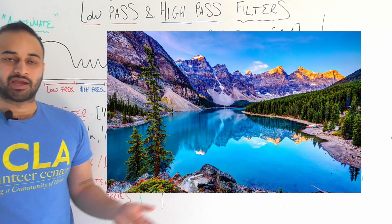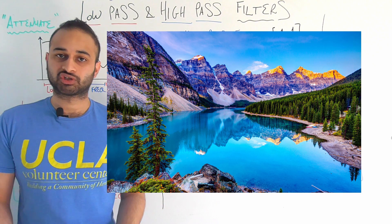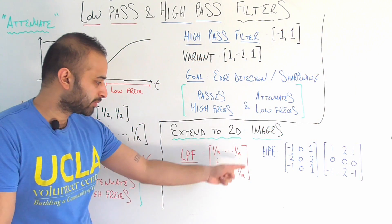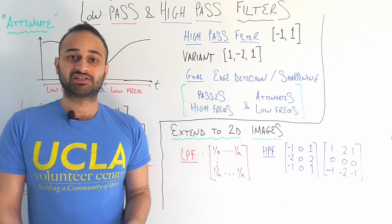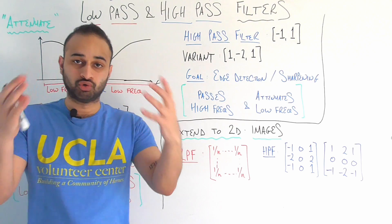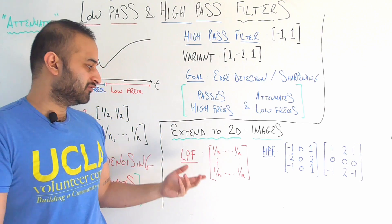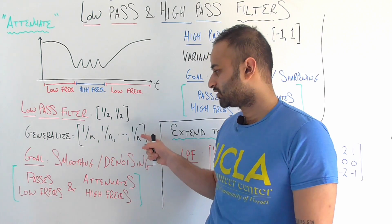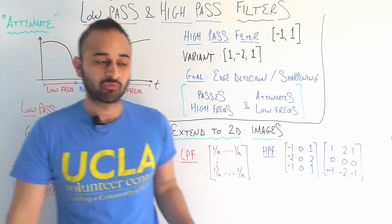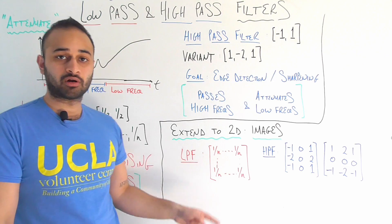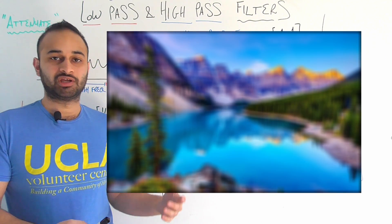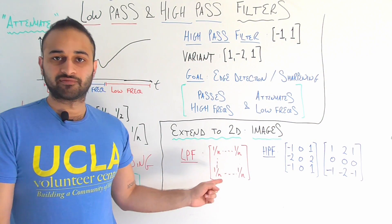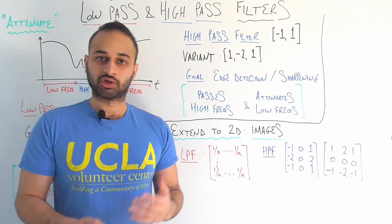Here's a picture of some scenery. If we want to apply a low-pass filter to blur or denoise it, we use a two-dimensional kernel — a straightforward extension of the 1D case to two dimensions. When we apply this kernel to the image, we get a blurred result, exactly as intended. The size of the kernel controls the amount of blurring.